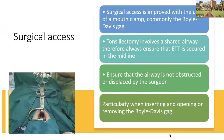Surgical access is improved using the Boyle-Davis mouth gag. Tonsillectomy involves sharing of the airway, so we secure the endotracheal tube in the midline and always ensure the airway is not obstructed or displaced. The RAE tube has a preformed curve at the lips which is fixed, so it can come out with neck extension, and the surgeon may also dislodge it during mouth gag application. We must be particularly careful during insertion, opening, or removal.